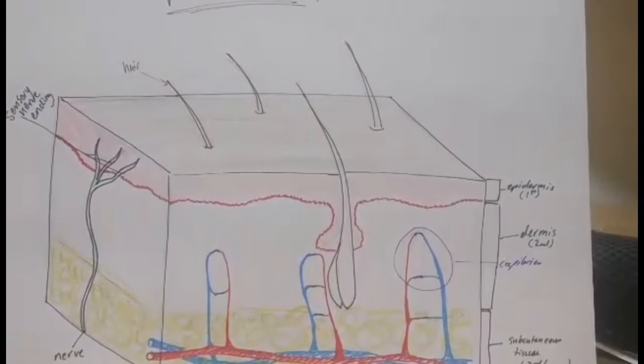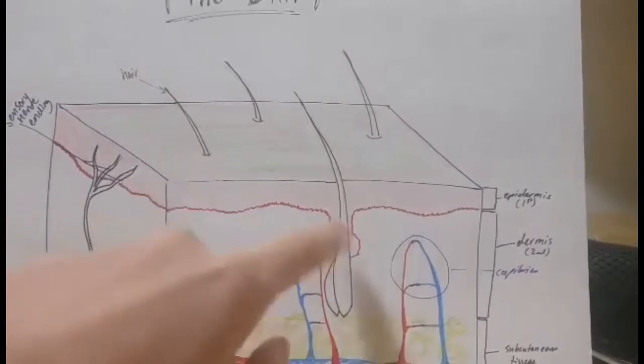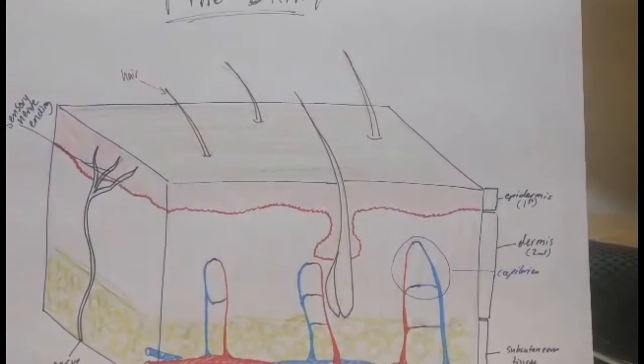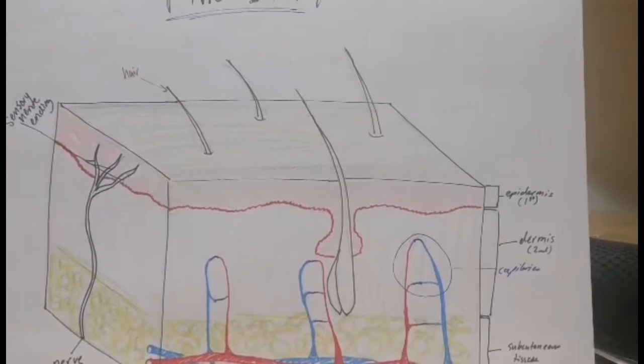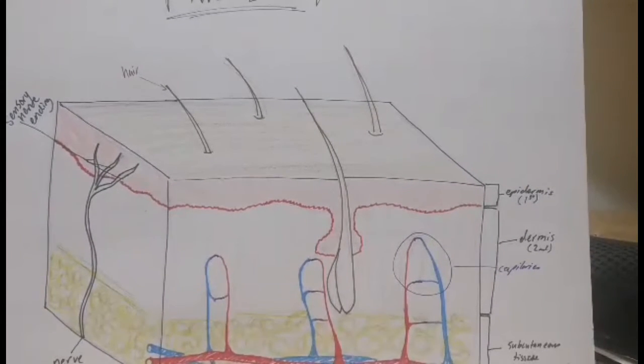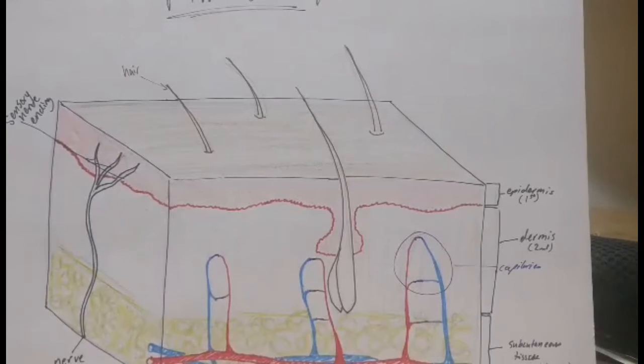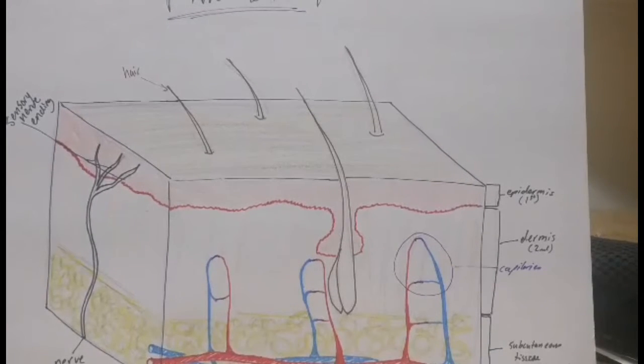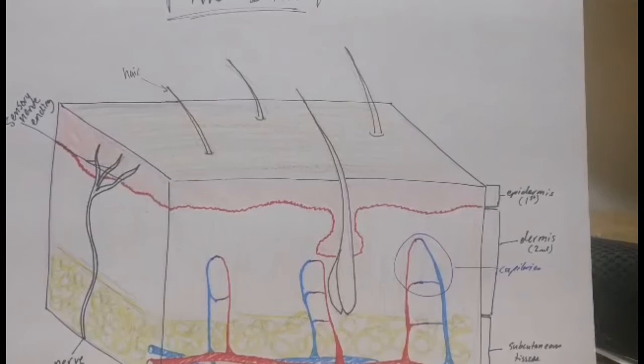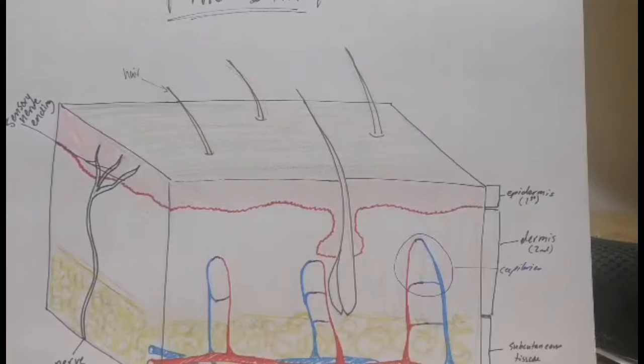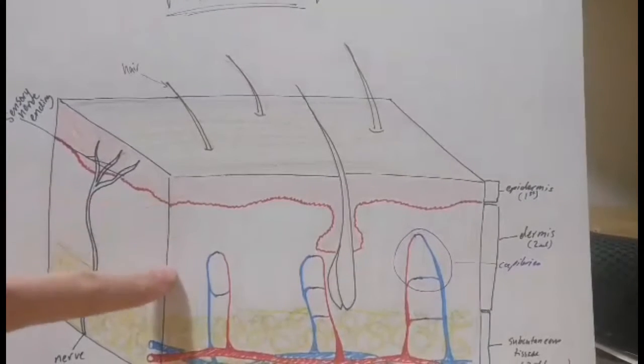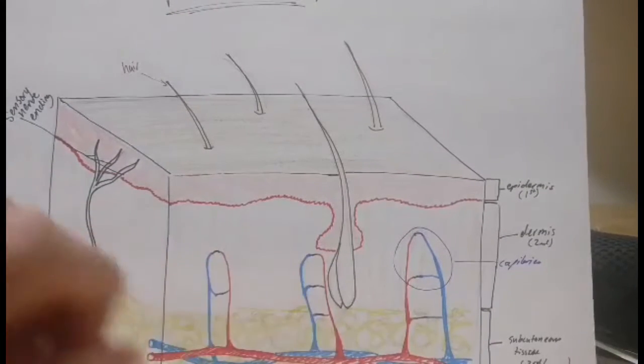Abrasions and scrapes rub this top layer of skin off, exposing the more sensitive lower layers of the epidermis. Notice there's no blood, no capillaries in the topmost layer. So when you have an abrasion or scrape that only takes the first layer off, you're not going to have much bleeding. If it's more serious and you go into the second layer, you're going to have some bleeding because you see all those little tiny blood vessels there.